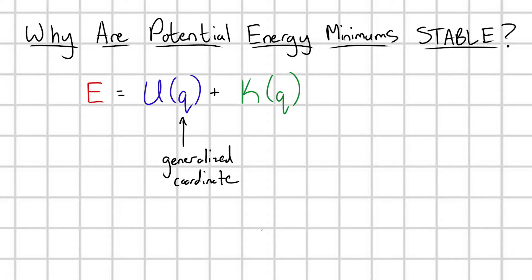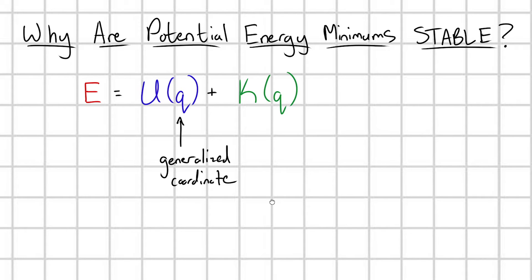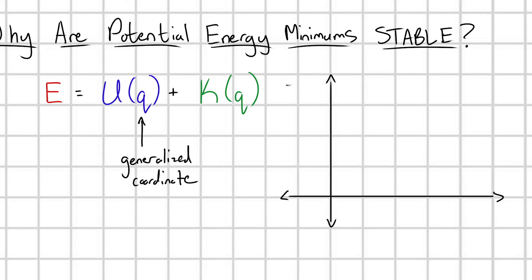And so what I can do is I can draw out an energy diagram. I put this coordinate Q on the x-axis here, and I have some general term energy on the y-axis. Why am I just putting energy on the y-axis? Because we're going to be putting down multiple energy curves. Let's suppose my particle has some arbitrary potential energy curve, something like this. So this is my particle's potential energy as a function of Q.